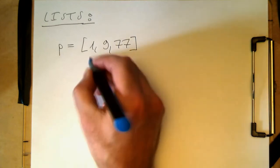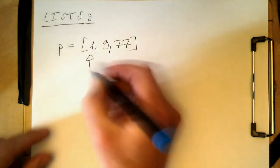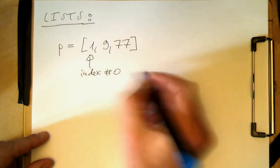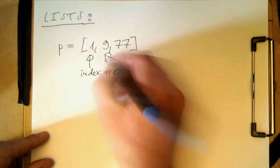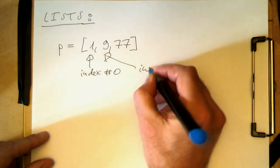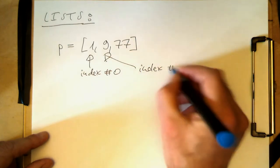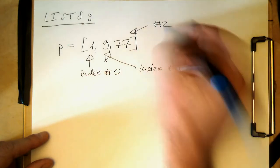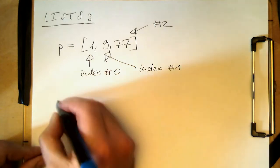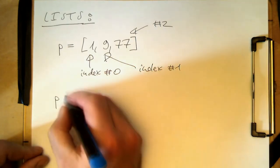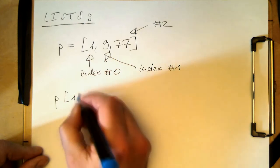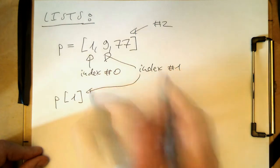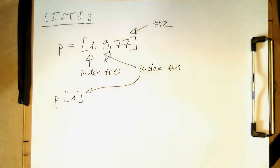If we've got this element here, this is then index number 0. That's index number 1, and that's index number 2. So if we want to access one of these elements, we write, for example, p of 1, and this should give us index 1, so we should get the number 9.